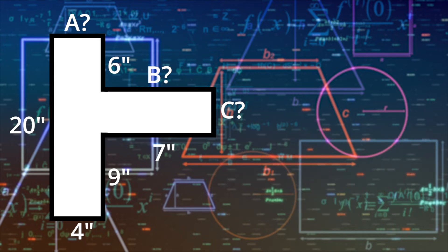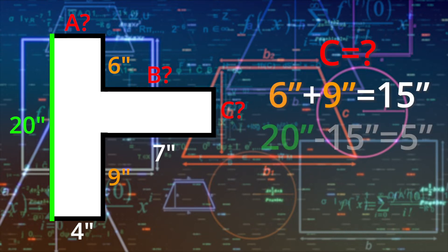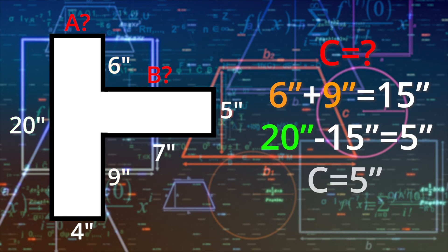Of course, sometimes finding the measurements of an odd-shaped figure can be tricky when you have limited information. Notice that there are missing lengths? Check it out. The length of the green line is 20 inches. This will help you find the length of C. First, we add the other two lengths together, 6 inches and 9 inches, to get 15 inches. Then we subtract 15 from 20 to get 5. So the length of line C is 5 inches.